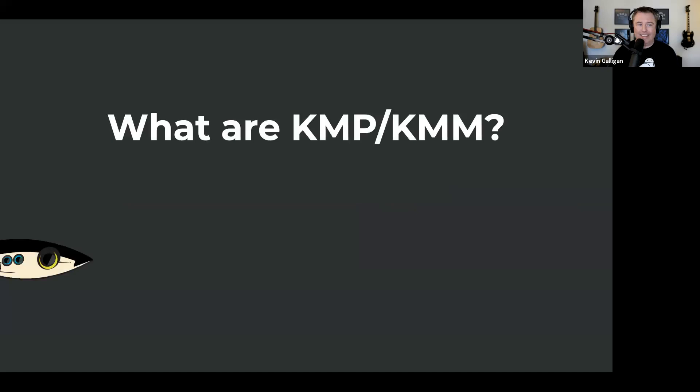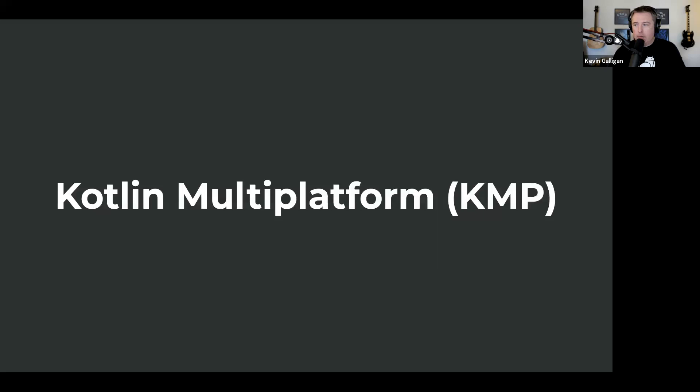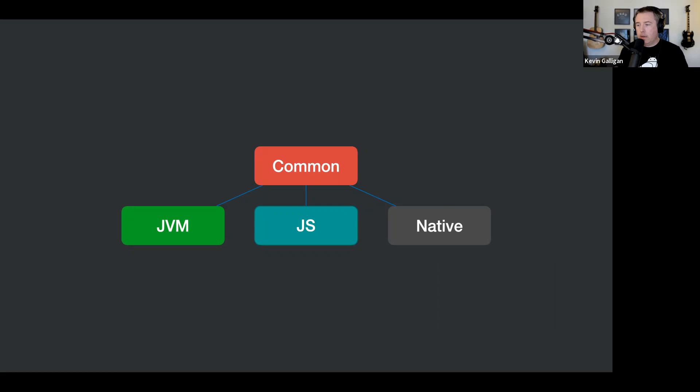So what is KMP and KMM? I'm going to give a very quick intro. Kotlin Multi-Platform is a mechanism by which you can share Kotlin code among many different platforms — JVM obviously, JavaScript, a bunch of native flavors. You have some platform-agnostic Kotlin and then a way to integrate it with specific platforms.